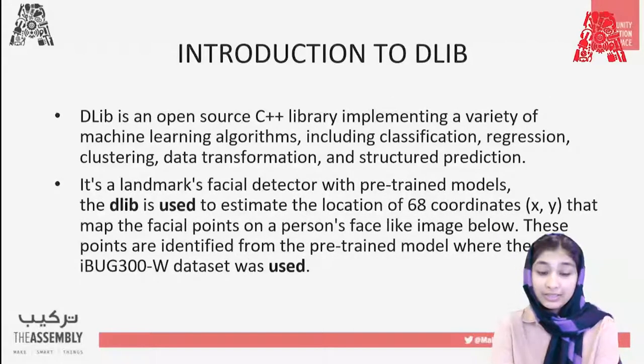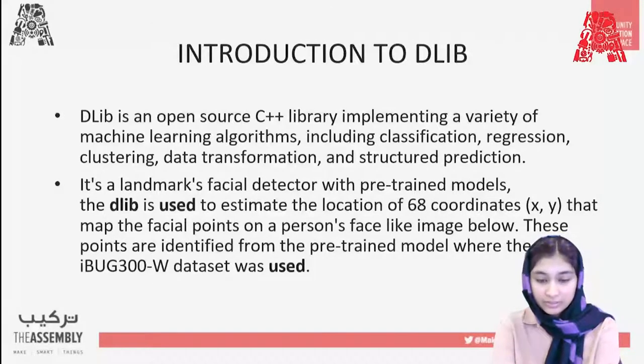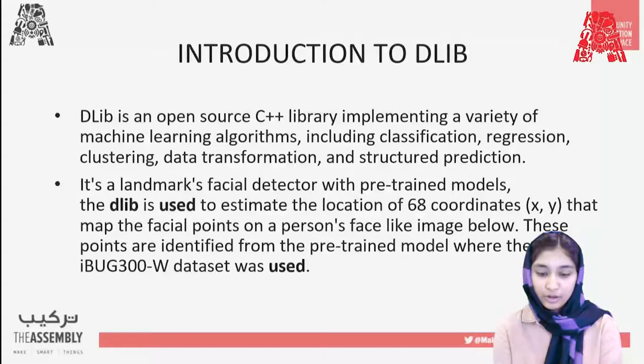We'll also be using the Dlib library today. Dlib is an open source C++ library implementing a variety of machine learning algorithms including classification, regression, etc. In this program, we'll be using it for facial landmark detection. It has been pre-trained with different models and is used to estimate the location of 68 coordinates (x, y) that map the facial points on a person's face.